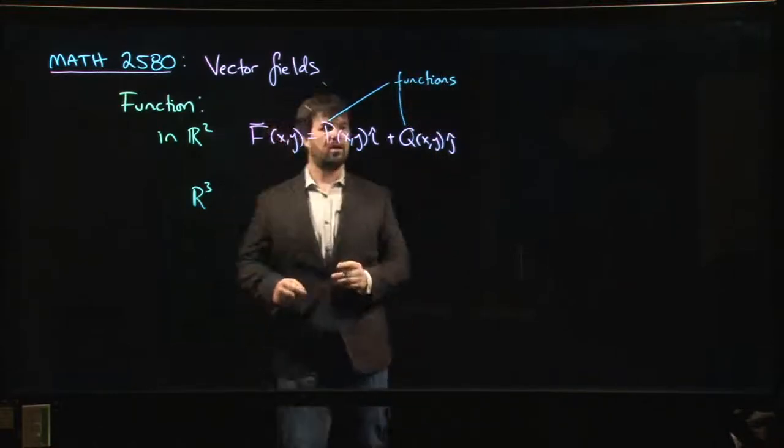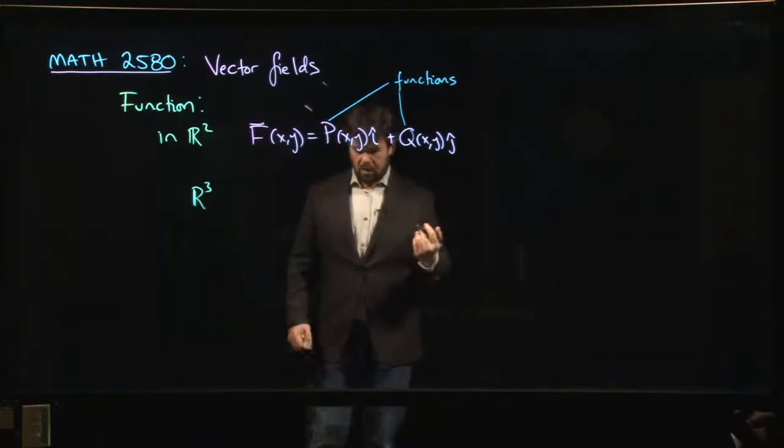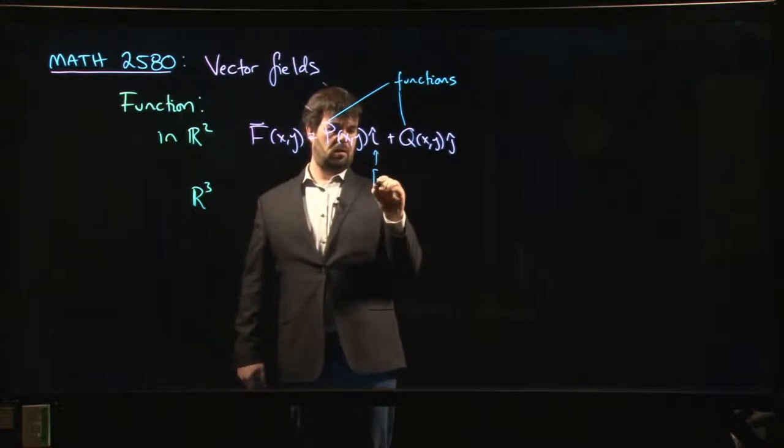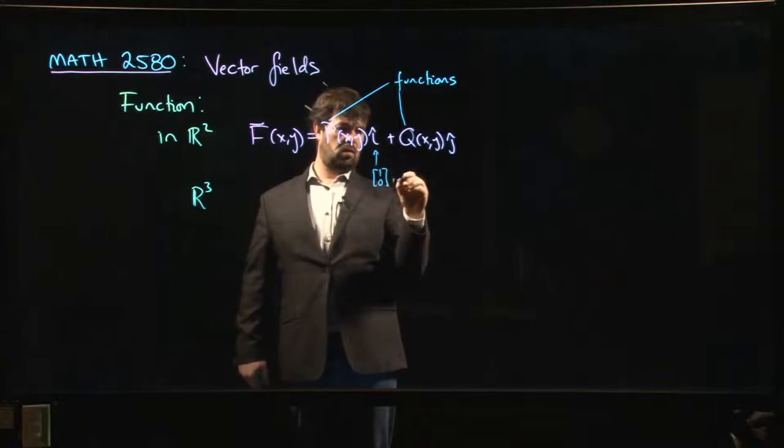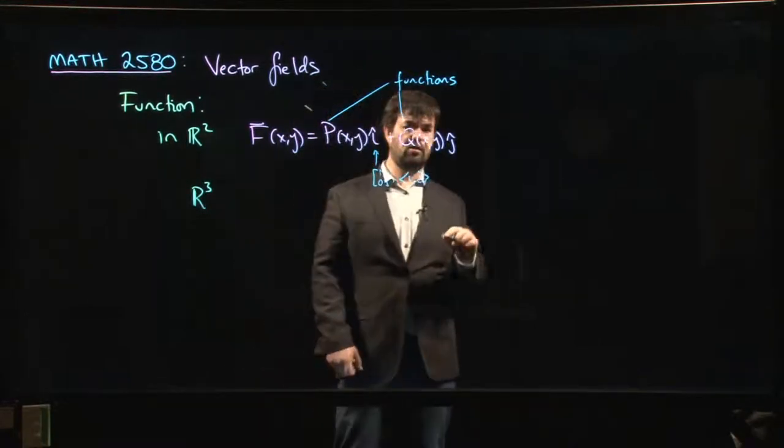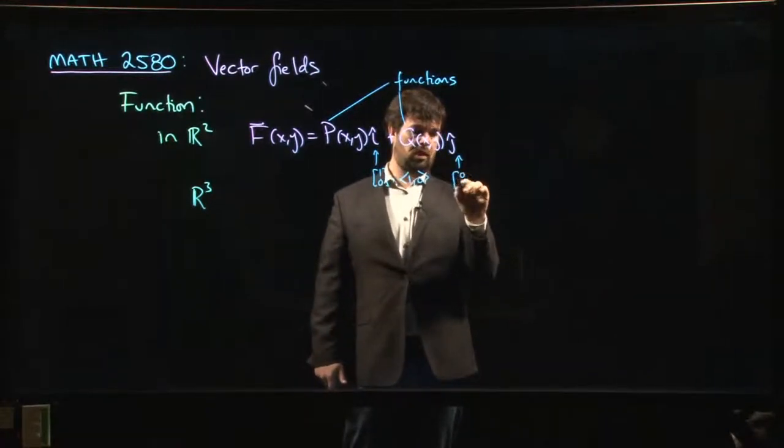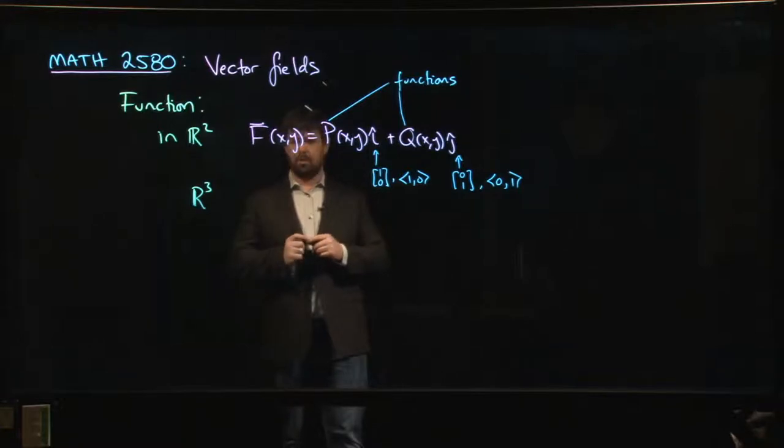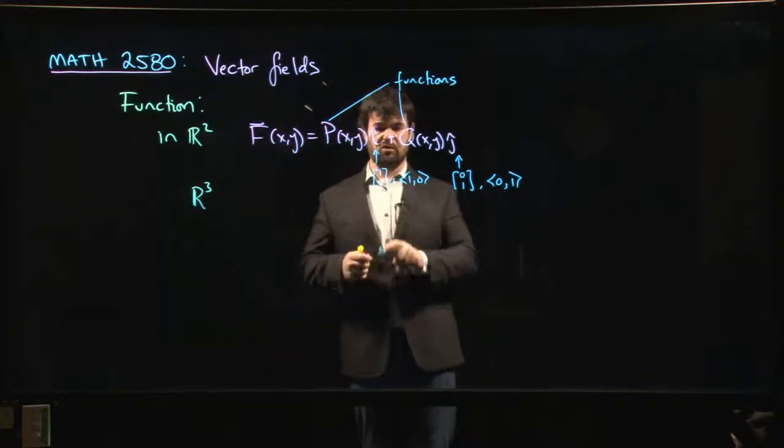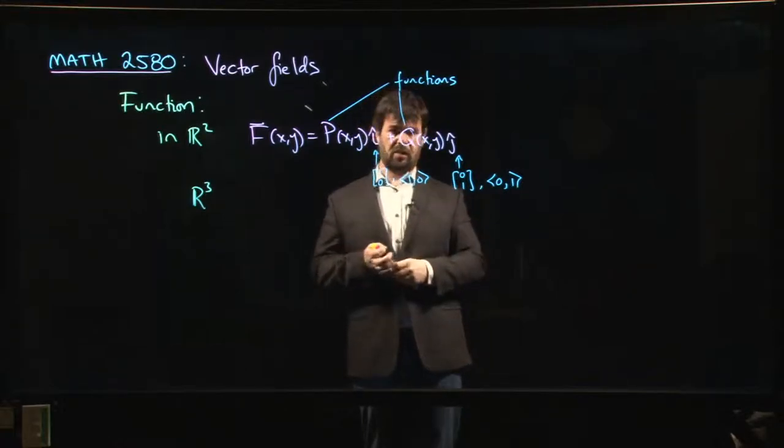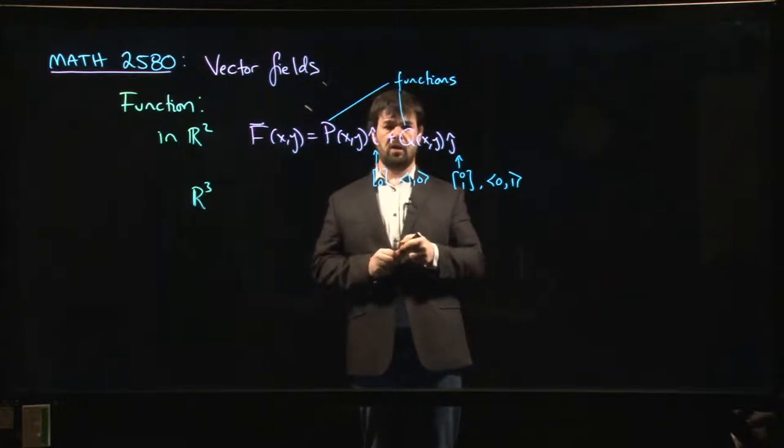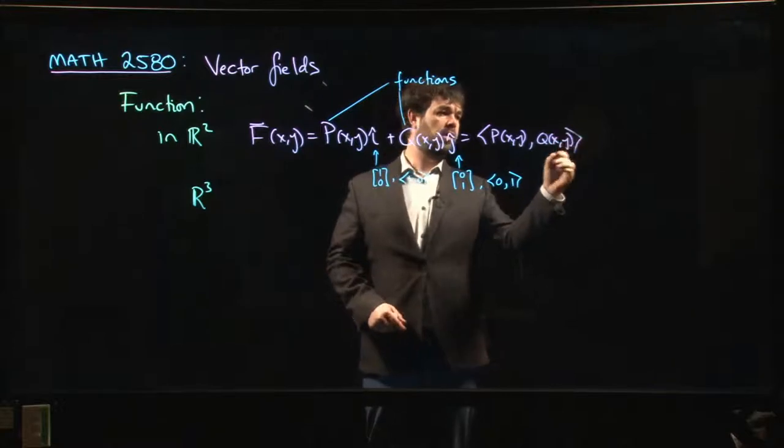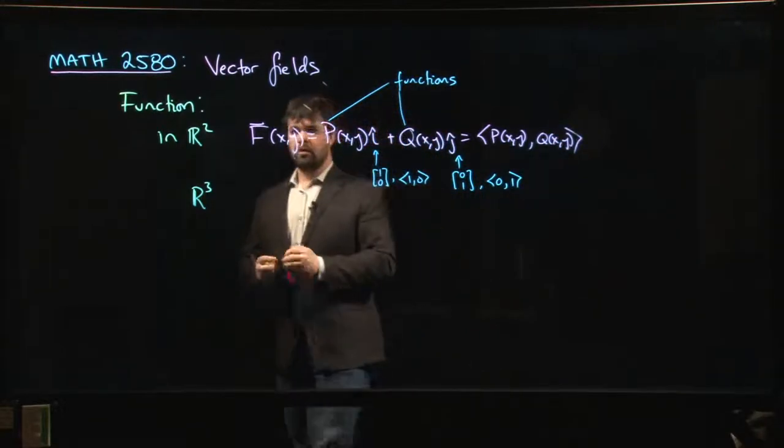Where P and Q are just real valued functions, generally C¹ or C², usually at least C². This i is the vector ⟨1,0⟩ or (1,0) depending on how you like to write vectors. Similarly j is ⟨0,1⟩. Generally we'll stick to angle bracket notation for calculus. You could also write this as ⟨P(x,y), Q(x,y)⟩.